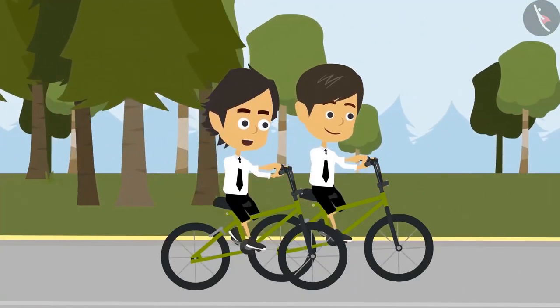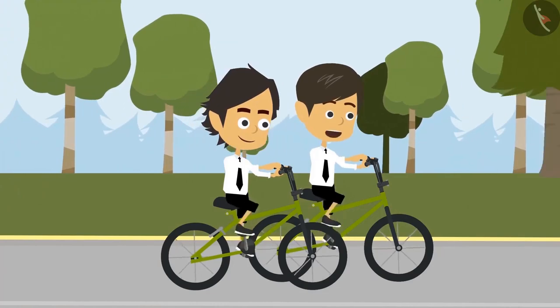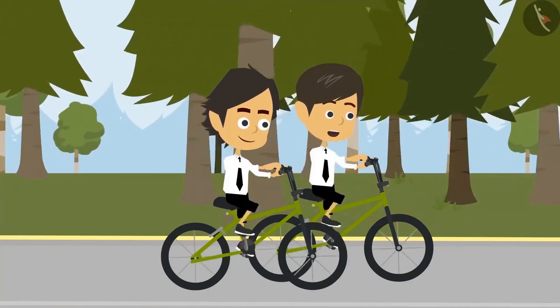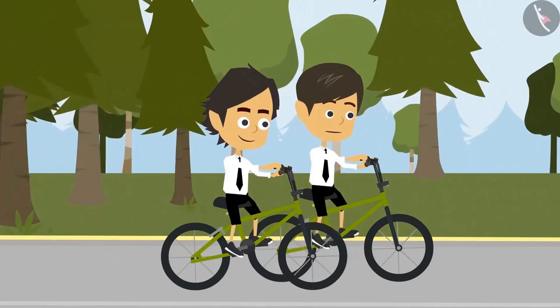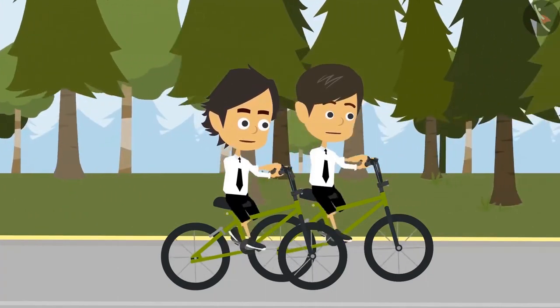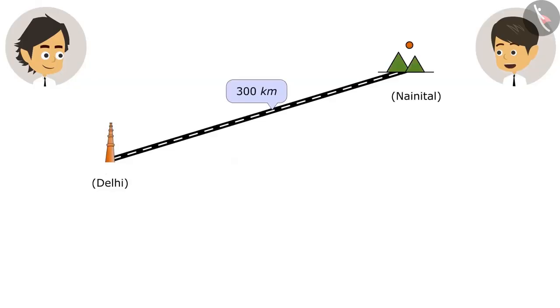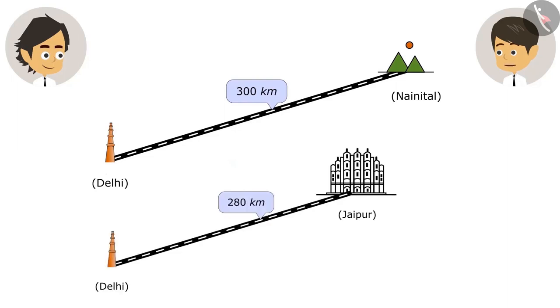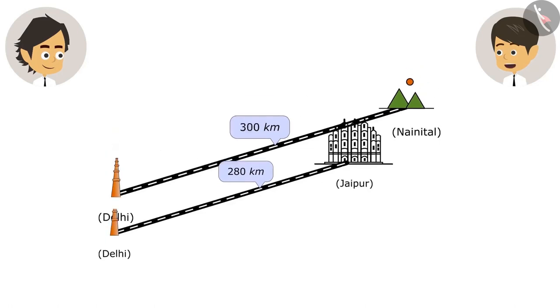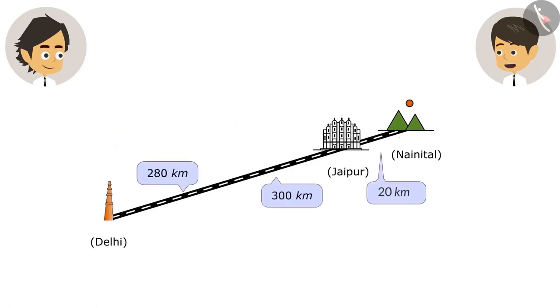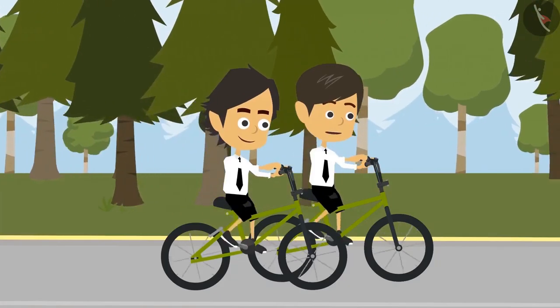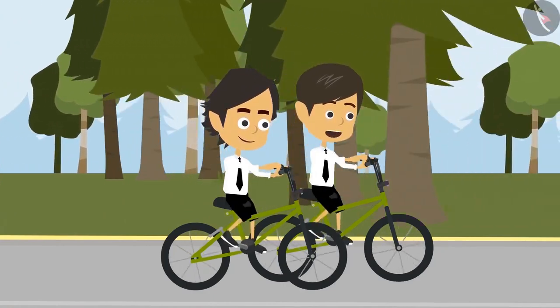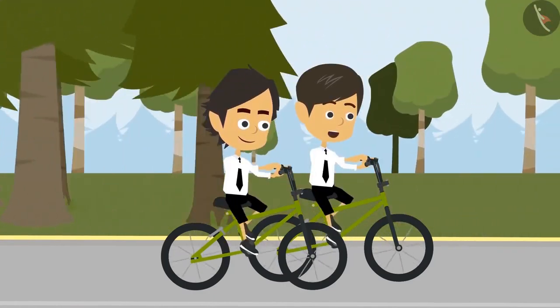I thought you would ask what a kilometer is. No, I know that. Kilometer is a unit of length measurement. Yesterday my Papa told me. If Nainital is 300 kilometers and Jaipur is 280 kilometers away, then the distance between Jaipur and Nainital is only 20 kilometers. That means we can also visit Jaipur while going to Nainital. Tell your Papa that we can go to both the places as the distance between them is only 20 kilometers.